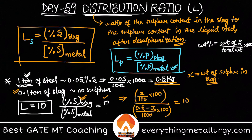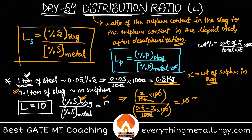The 100s cancel on both sides, and simplifying further, the 10 in the denominator cancels with the L value of 10, leaving x equal to 0.5 minus x. Therefore 2x equals 0.5, giving x equals 0.25 kg.